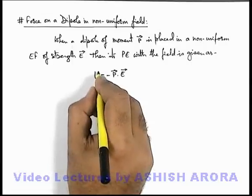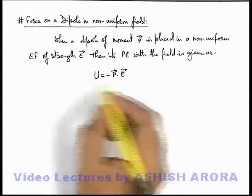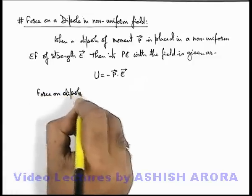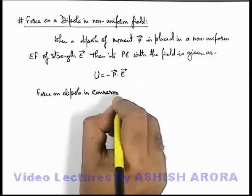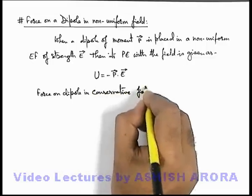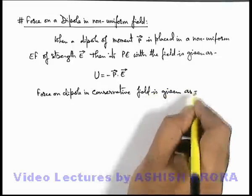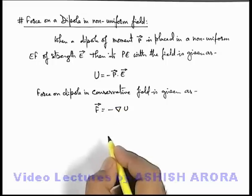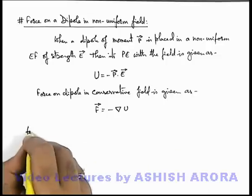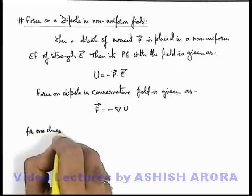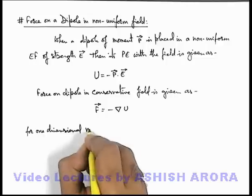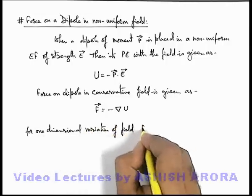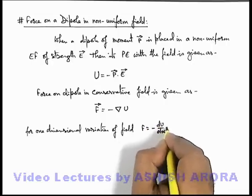So if we know the potential energy of the system, we can directly find out the force. We can write that the force on a dipole in a conservative field is given as the negative of the gradient of the potential energy. So for one-dimensional variation of field, the force can be written as minus dU/dx î.